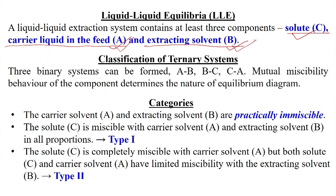We need to understand the classification of ternary systems. With components A (carrier solvent), B (extracting solvent), and C (solute), there are three binary pairs: A-B, B-C, and C-A. The mutual miscibility behaviour of these components determines the nature of the equilibrium diagram. The first system is where carrier solvent A and extracting solvent B are practically immiscible — this is generally not useful for liquid-liquid extraction.